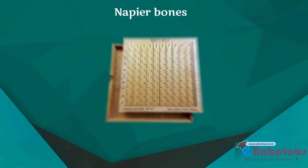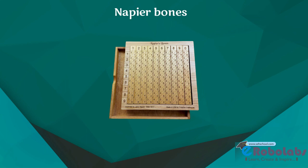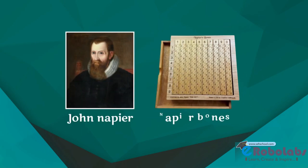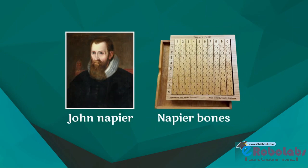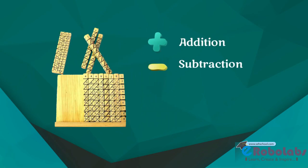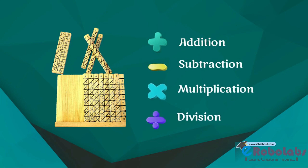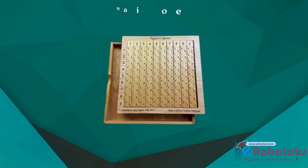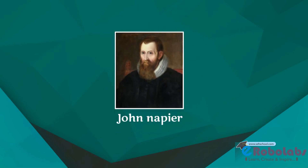As necessity demanded, scientists started inventing better calculating devices. John Napier of Scotland invented a calculating device in the year 1617, called the Napier's Bones. In this device, Napier used bone rods for the counting purpose, where some numbers are printed on these rods. With these rods, one can do addition, subtraction, multiplication, and division easily. It is a manually operated calculating device created by John Napier for calculation of products and quotients of numbers.